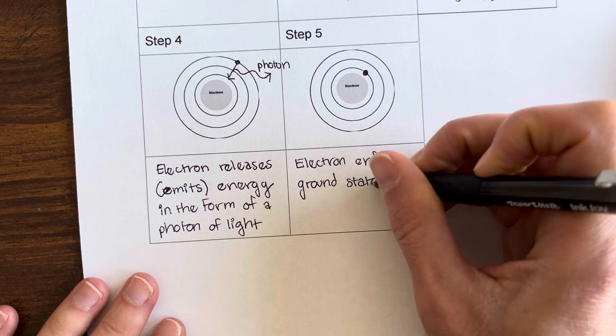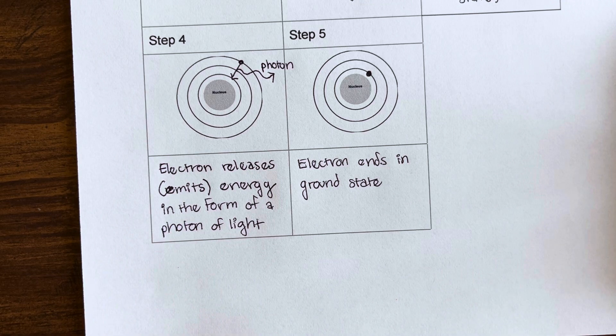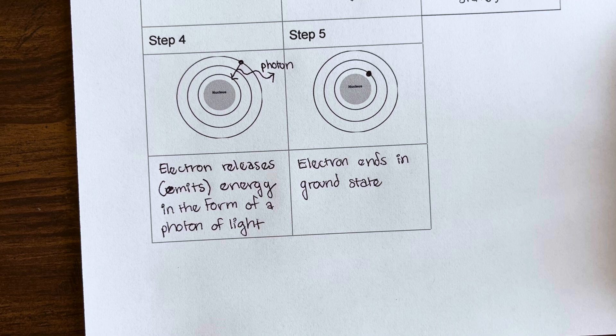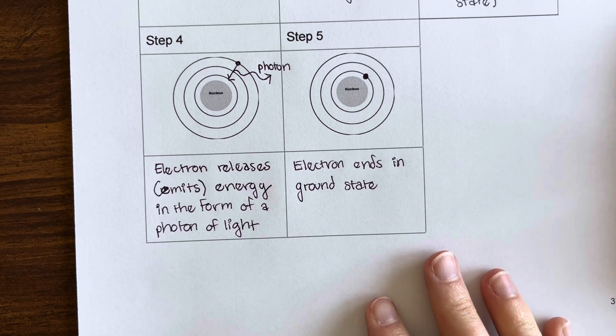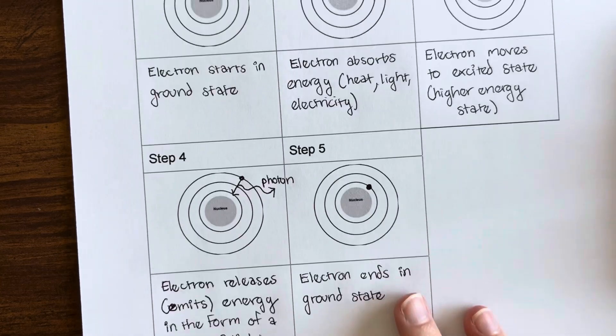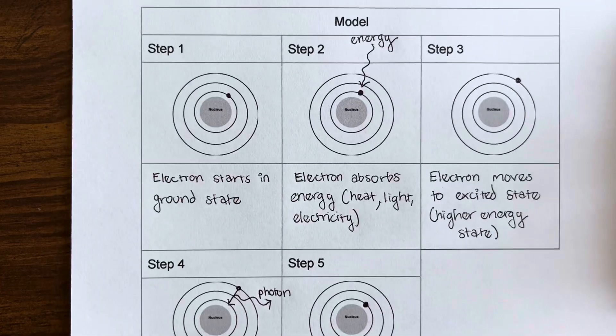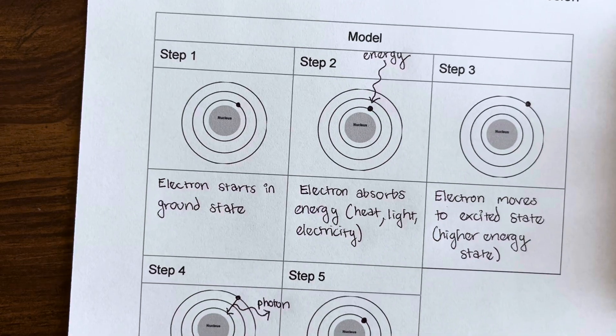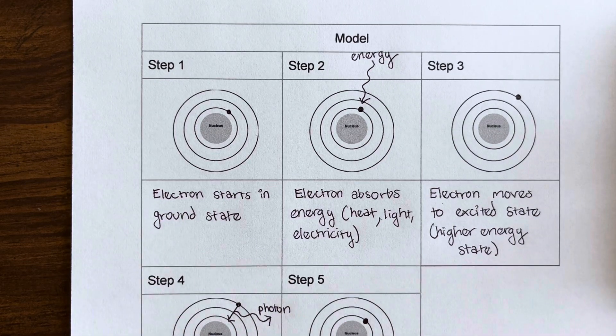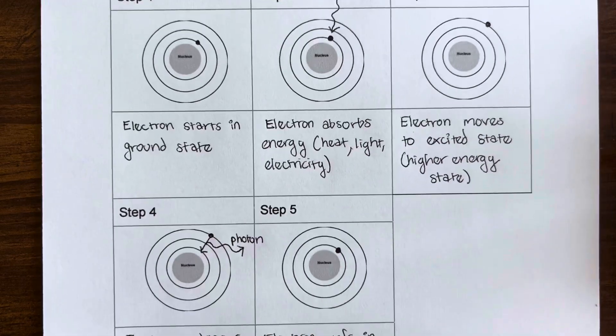And just to help you understand, this process takes place extremely quickly. Like, less than a second, electrons are bouncing up to excited state, coming back down. Obviously, when you're heating up an element sample, there's going to be billions and billions of atoms all having their electrons doing this. So there's going to be lots of photons coming off, lots of light. And this process can just keep going continually as you keep giving energy to the atom.